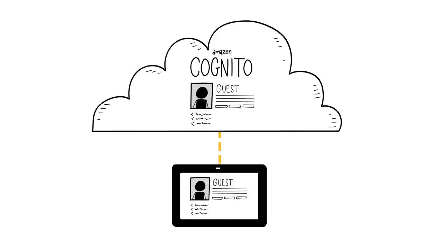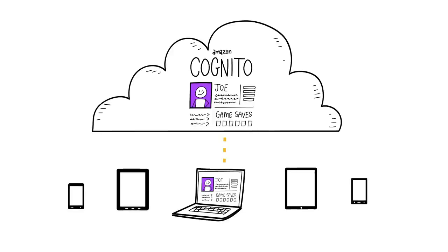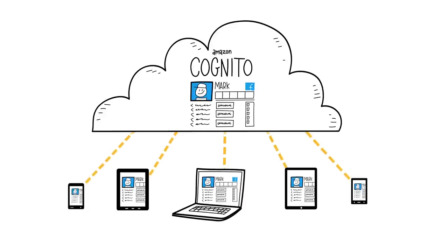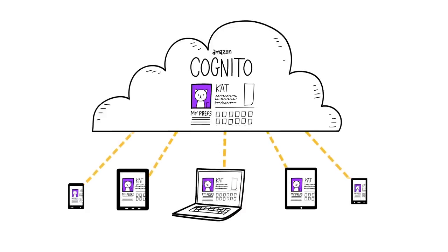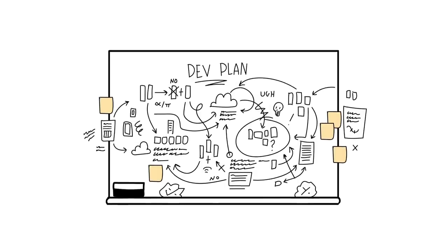Users can start off trying your app without logging in, and then when they do create a profile using one of the public login providers, their profile data is seamlessly transferred. You can use Amazon Cognito to save any kind of user data in key-value pairs, whether that's app preferences, game state, or anything that makes sense for your app.